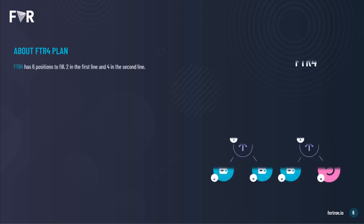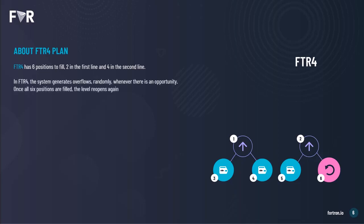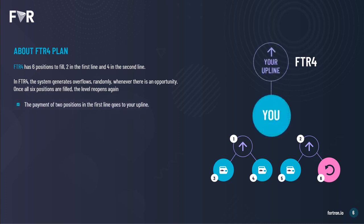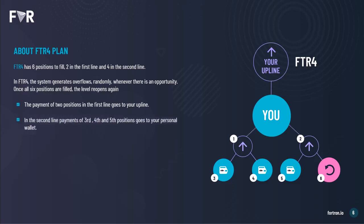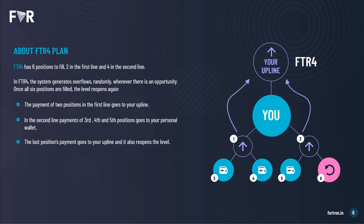In the FTR4 plan, there are six positions to fill — two in the first line and four in the second line. In FTR4, the system generates overflows randomly wherever there is an opportunity, and once all six positions are filled, that level reopens again. The payment from the two positions in the first line goes to your upline. In the second line, the third, fourth, and fifth positions go to your personal wallet, and the last position's payment goes to your upline and is used to reopen the level.